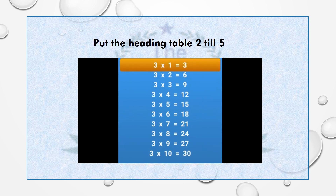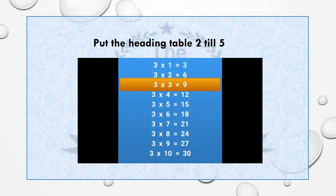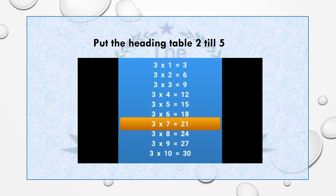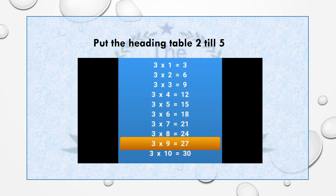3 x 1 = 3. 3 x 2 = 6. 3 x 3 = 9. 3 x 4 = 12. 3 x 5 = 15. 3 x 6 = 18. 3 x 7 = 21. 3 x 8 = 24. 3 x 9 = 27. 3 x 10 = 30.